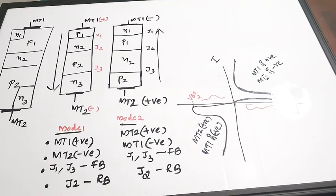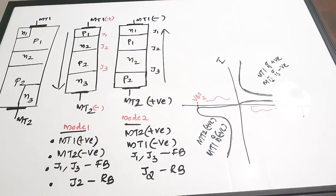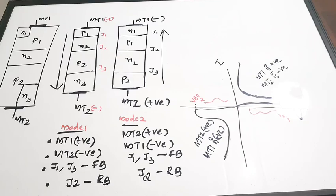To summarize: in Mode 1, MT1 is positive and MT2 is negative; in Mode 2, MT2 is positive and MT1 is negative. The DIAC has only two terminals, and the biasing voltages are applied to these two terminals. In this video we covered the structure, characteristics, and working of the DIAC. If you found it helpful, please give a thumbs up, share with your friends, and subscribe to the channel.